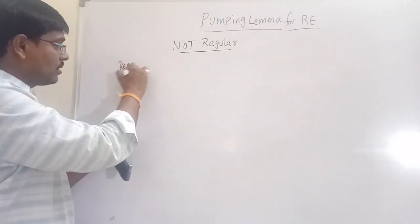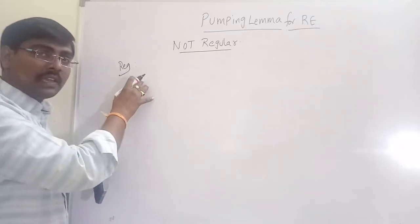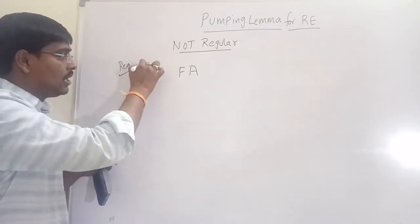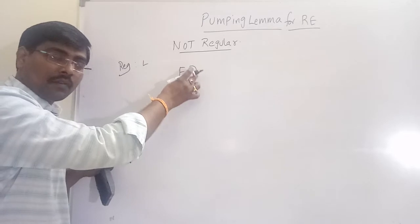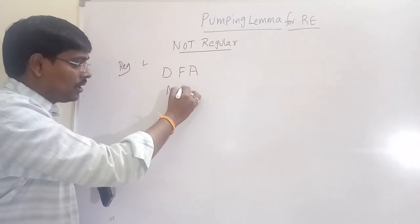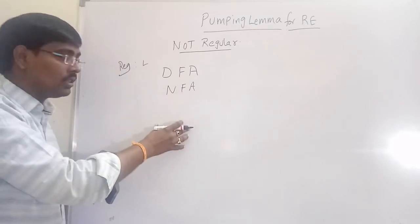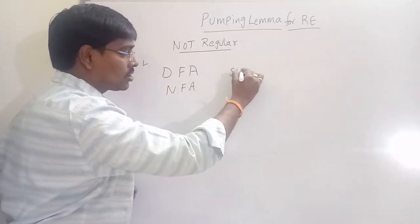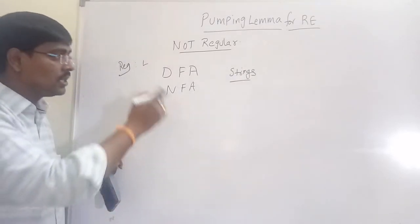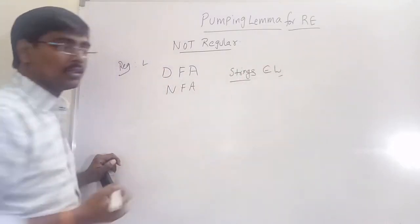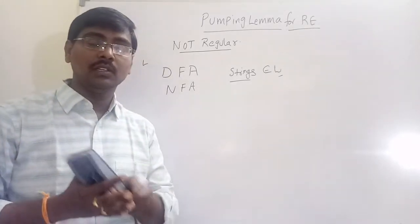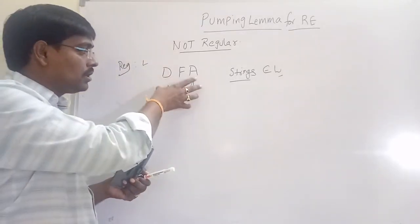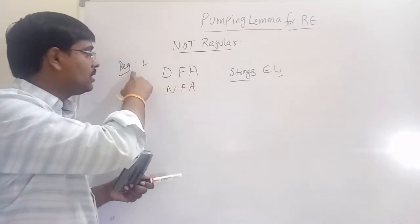What is a regular language? For a given language L, if we construct a finite automata — either a DFA, NFA, or NFA with epsilon transition — that accepts all the strings that belong to L, then that language is a regular language. If it is not possible to construct a finite automata, then it is not a regular language.